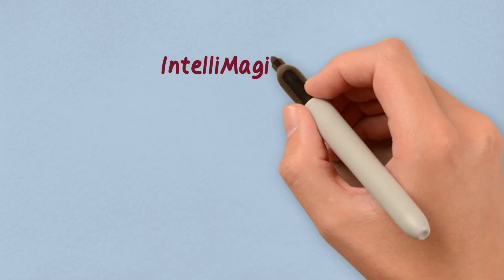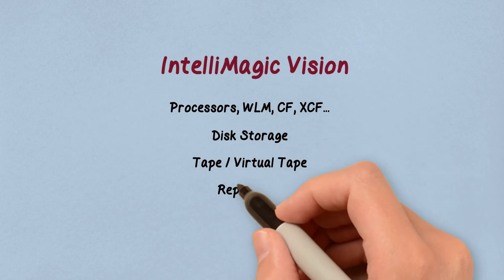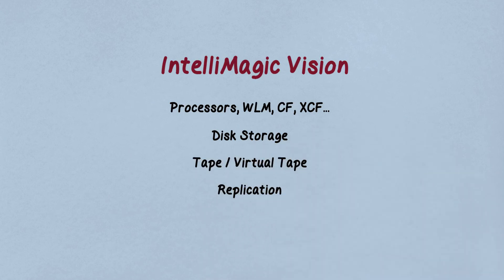IntelliMagic Vision produces this availability intelligence for your ZOS infrastructure from processors down to the physical disks and on other mission-critical ZOS resources as well, such as virtual tape and the replication infrastructure.